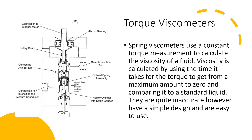This is a type of torque viscometer. You have spring viscometers, load viscometers, and other torque viscometers. The spring viscometer uses a constant torque measurement to calculate the viscosity of a fluid — specifically, the time it takes for the torque to go from a maximum amount to zero, compared to a standard fluid. They're inaccurate, but they have a simple design, are easy to use, and are typically used for high pressure liquids.